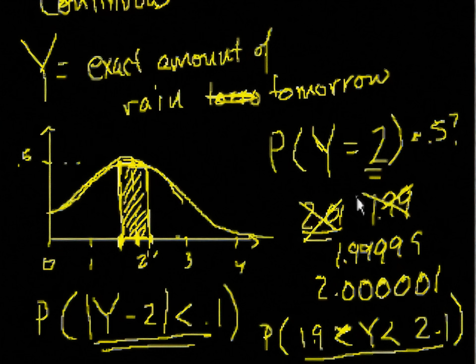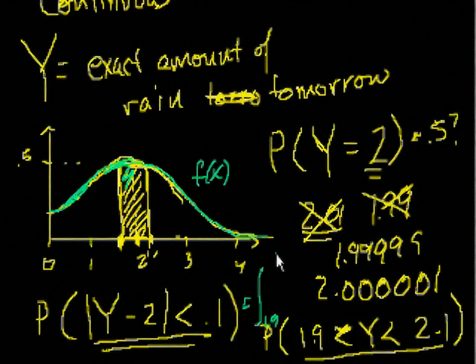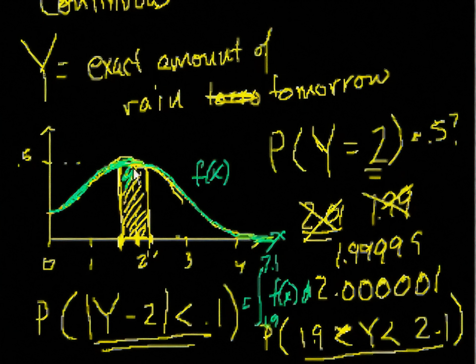For those of you who have studied calculus, that would essentially be the definite integral of this probability density function from this point to this point. So if this line was defined by — I'll call it f of x — the probability of this happening would be equal to the integral from 1.9 to 2.1 of f of x dx, assuming this is the x-axis. When a random variable can take on an infinite number of values, to get it exactly at 1.999, the probability is actually 0.